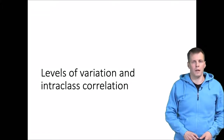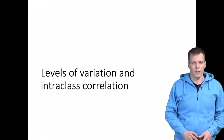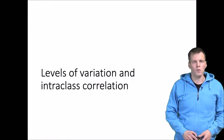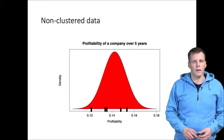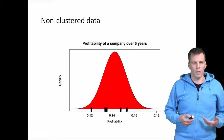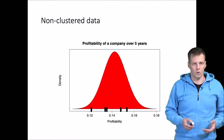One of the first things we analyze when working with multilevel data is on which level each individual observation varies. We also calculate intraclass correlations to quantify these variances. Let's take a look at an example to understand what levels of variation on an individual variable level means.